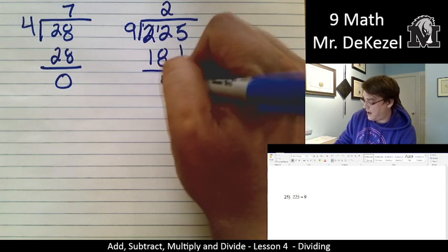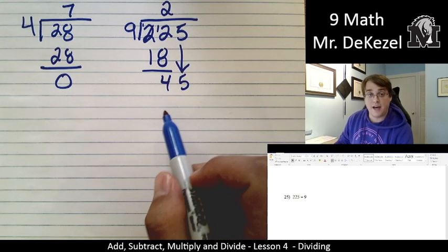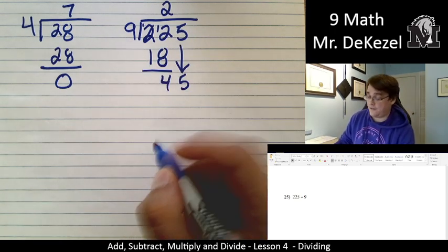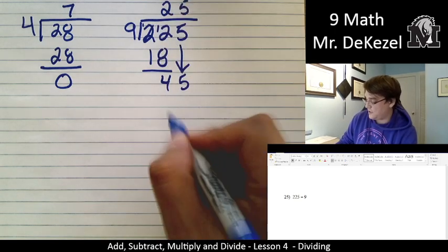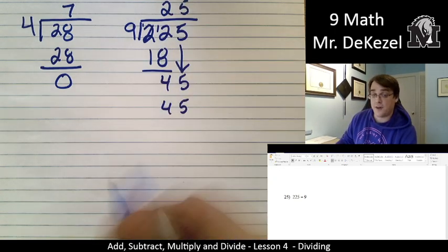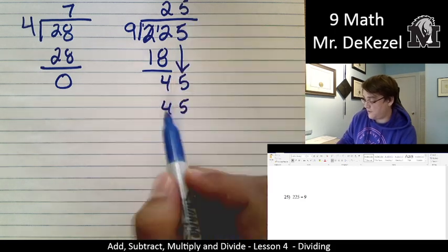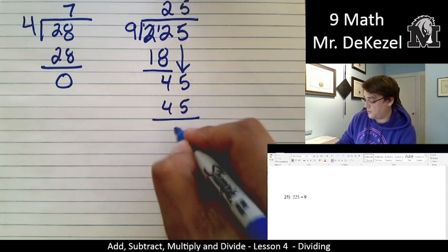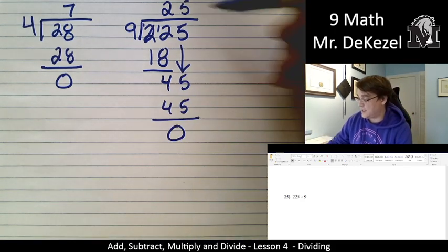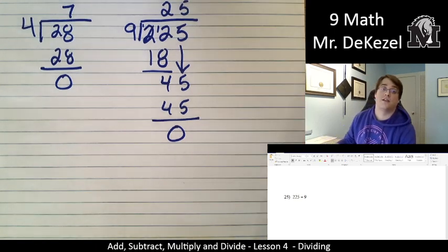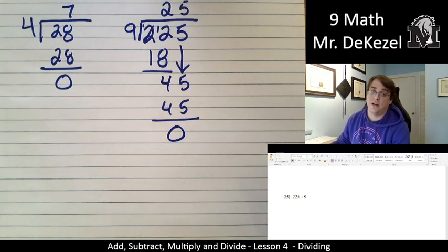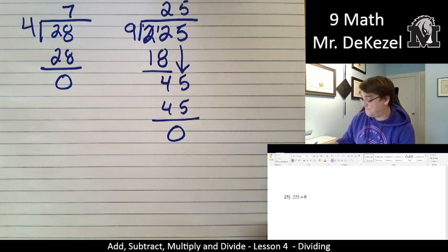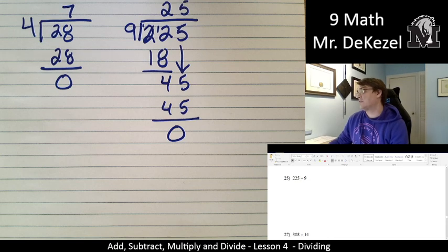We're going to draw down our 5, so we have 45. Nine goes into 45 five times. Nine times 5 is 45, so that means it goes in there five times. 45 minus 45 is zero, and that means 25 is our answer. Nine goes into 225 twenty-five times. Nice and easy when it works out.